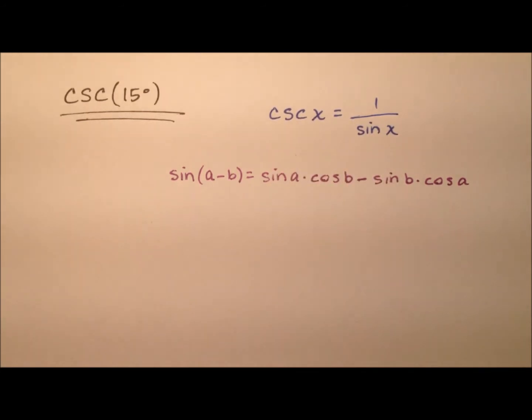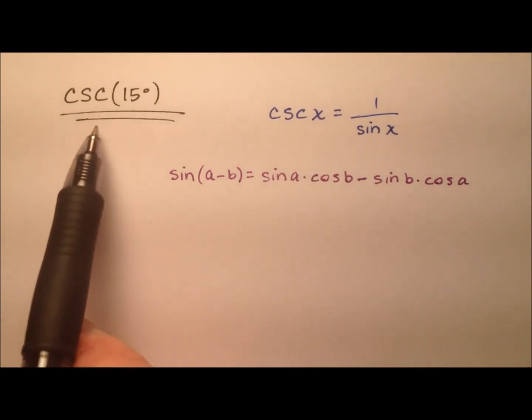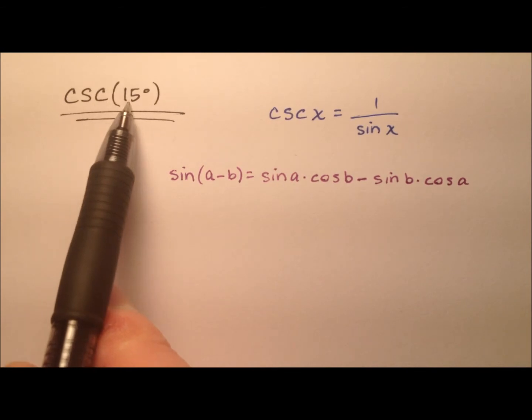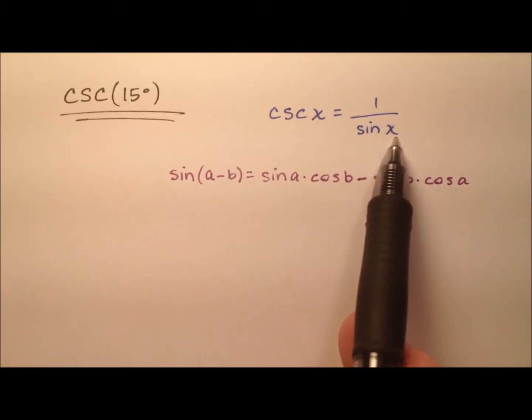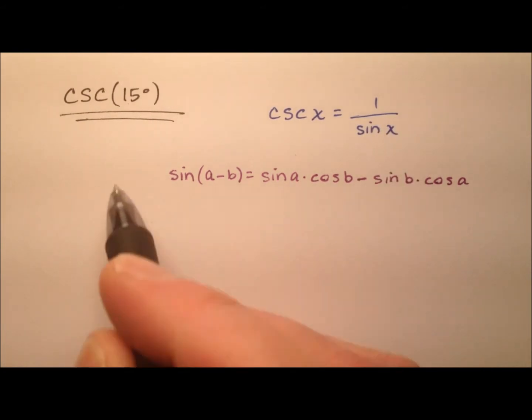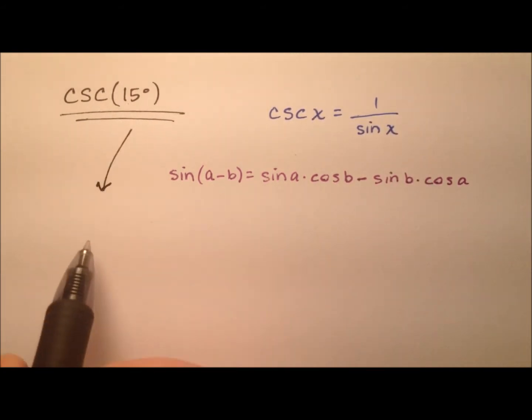These two things are equal. So to find the exact value for cosecant of 15 degrees, we can find the exact value for sine of 15 degrees and then take its reciprocal. Let's go ahead and do that. This is going to be 1 over the sine of 15 degrees.